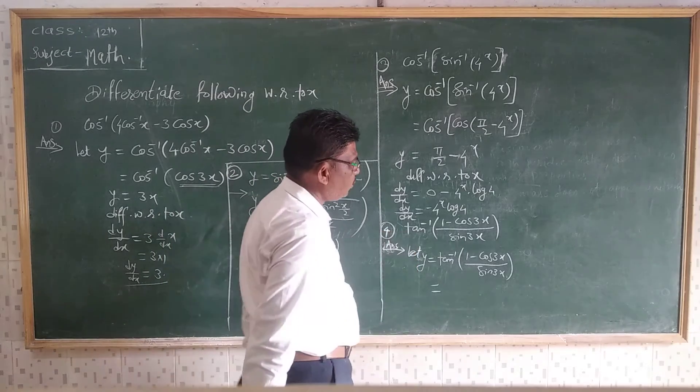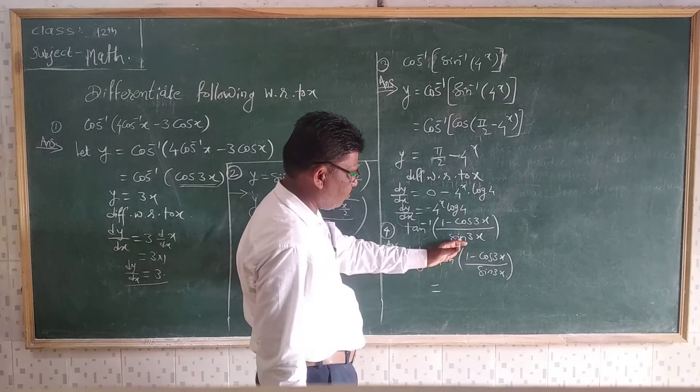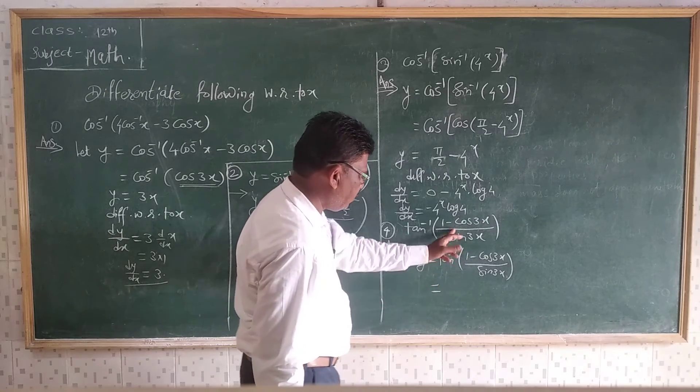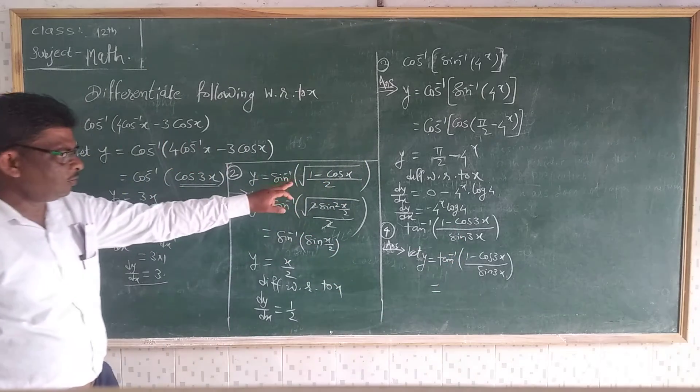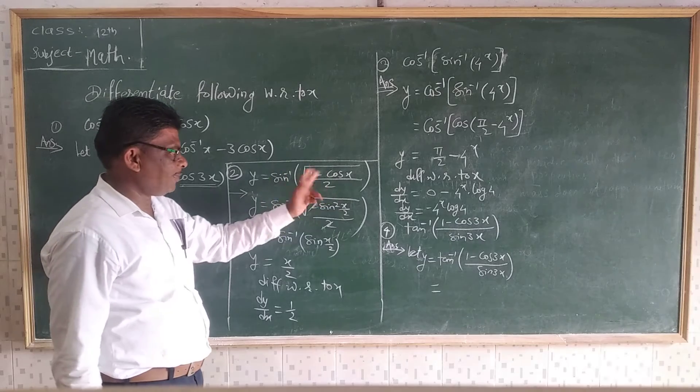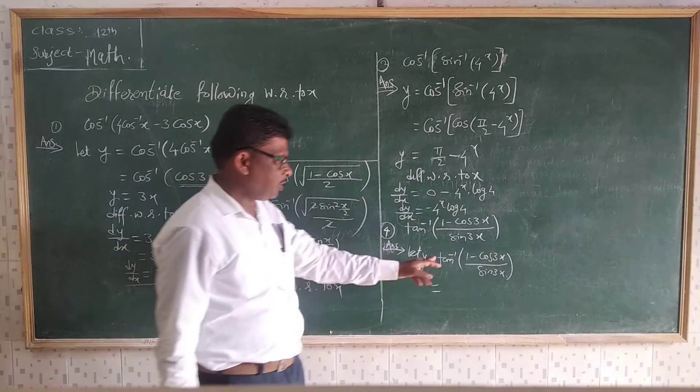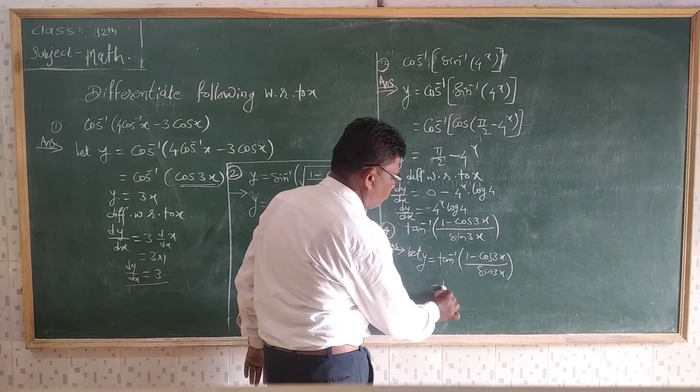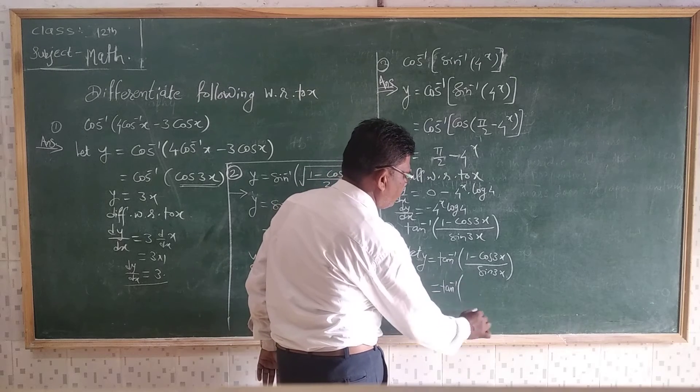Tan inverse of 1 minus cos 3X upon sin 3X. Just similar to this, 1 minus cosX. 1 minus costheta is 2 sin²(X/2), right? We have to solve this also using the same formula for simplification.